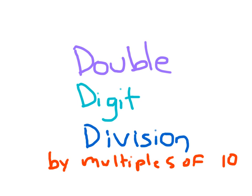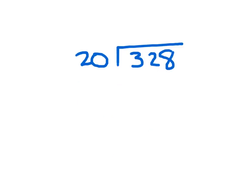Let's go ahead and learn about double-digit division, and we're going to use multiples of 10 for our divisor. Here we're going to look at this type of problem where we have 328 divided by 20. 20 is our divisor. It's two digits, double digits. That's why we call it double-digit division.